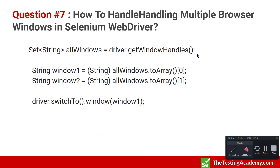Question eight: How to handle multiple browsers or windows. It's very straightforward. You can use `driver.getWindowHandles()`, which gives you all the handles. Store them in a Set since they are unique. If you have three tabs open, the indices will be 0, 1, 2. You can then use the `switchTo` method to switch to these windows.